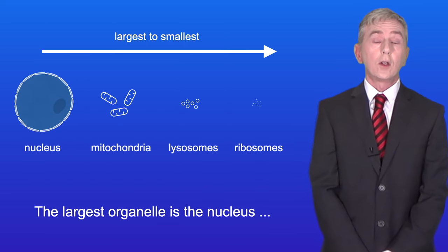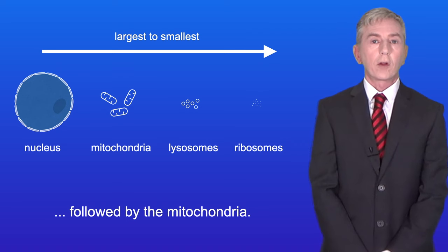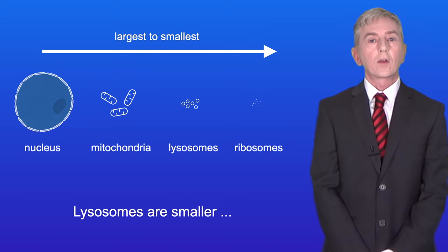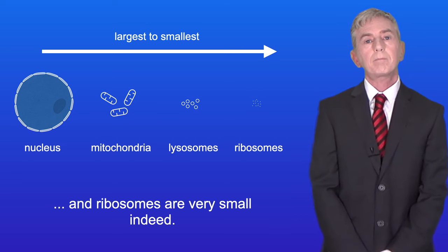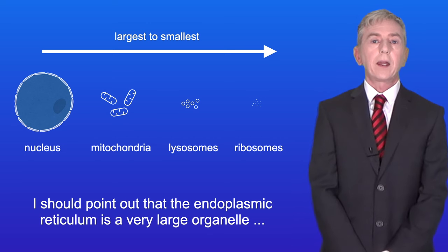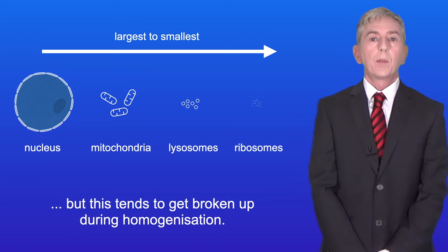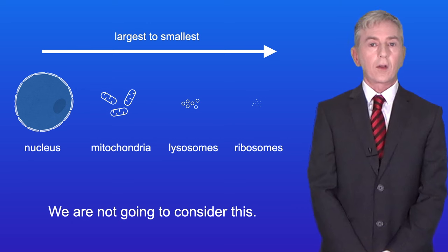The largest organelle is the nucleus followed by the mitochondria. Lysosomes are smaller and ribosomes are very small indeed. Now I should point out that the endoplasmic reticulum is a very large organelle but this tends to get broken up during homogenization so we're not going to consider this.